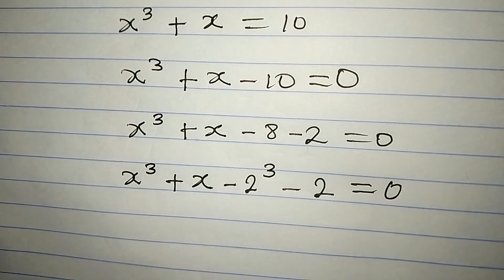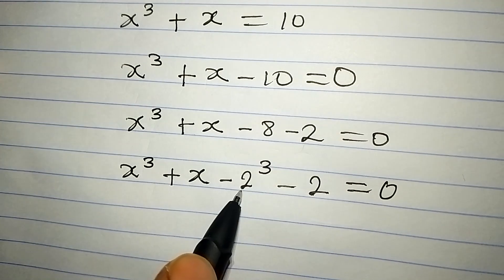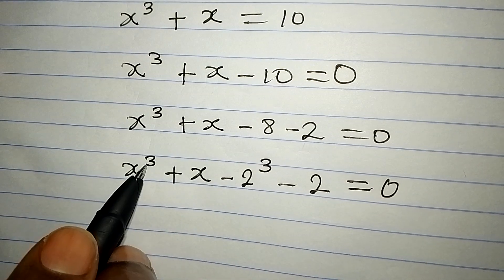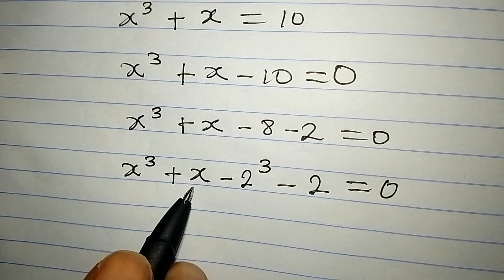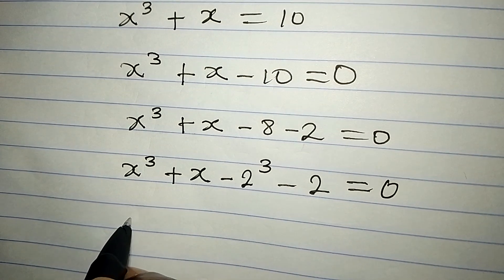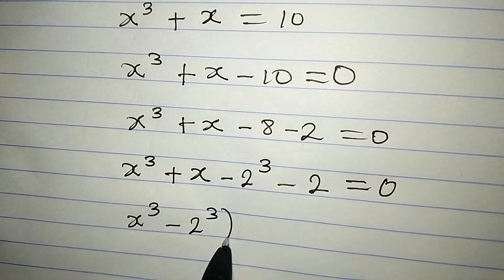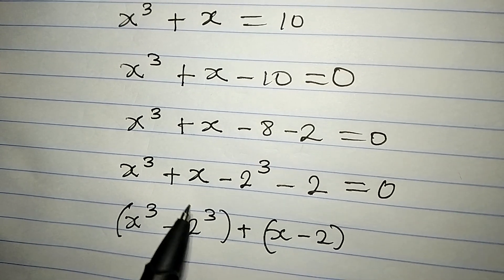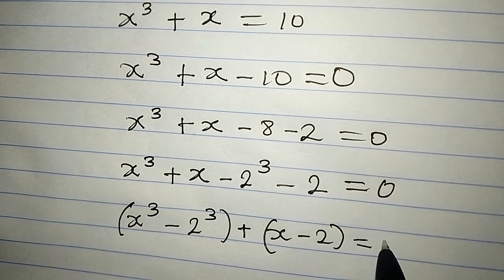Before using this method, you need something in mind: we want to express what we have here in the form that allows x³ to be compared to 2³, and x compared to 2. So now we are having x³ minus 2³, which we will deal with separately, then plus x minus 2. Everything is going to equal 0.